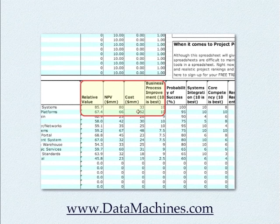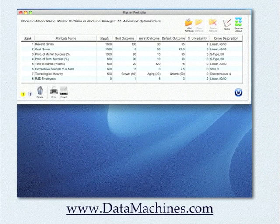So there you have it. The attributes define what you're going to use to compare your projects, and their weights describe the importance of each attribute to the project ranking. The project attribute values determine the project ranking depending on the attribute weight. Because this is a spreadsheet program, it is very limited in the type of modeling that you can do for a portfolio.